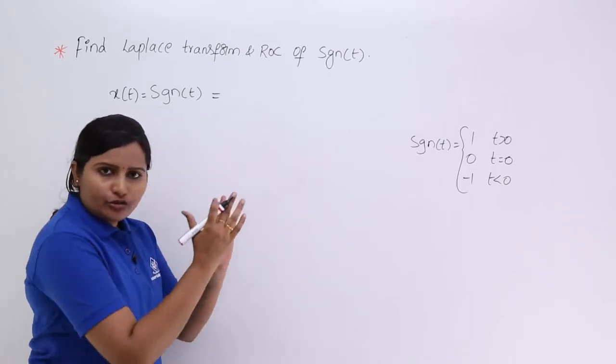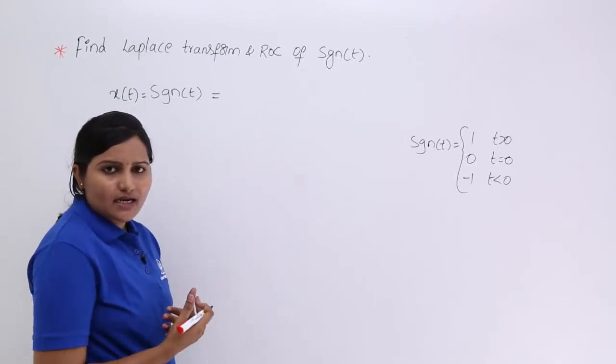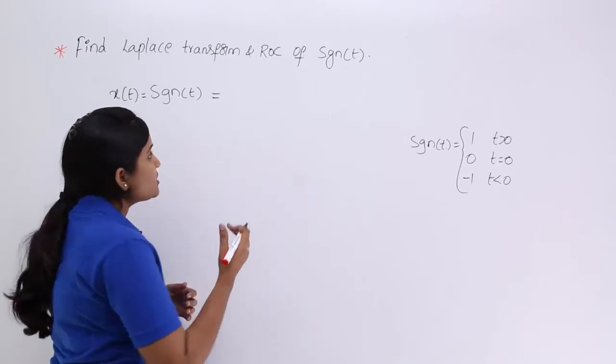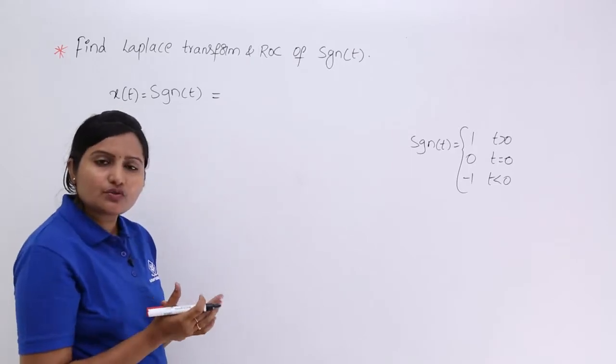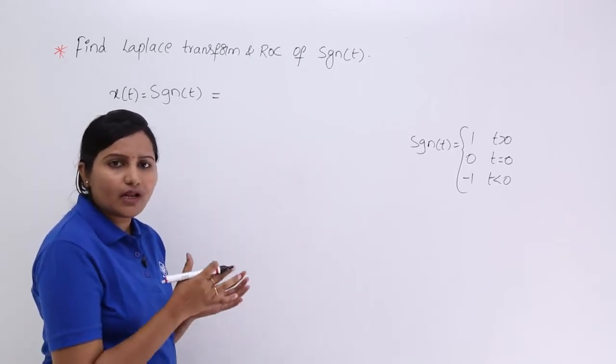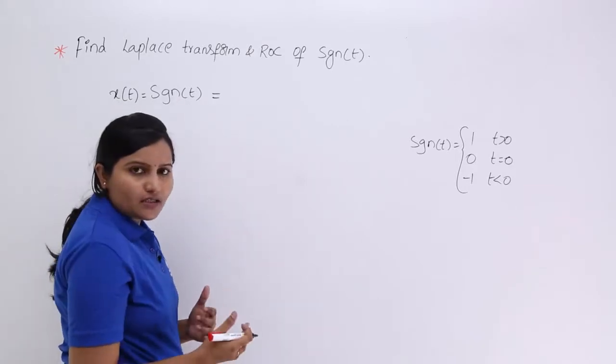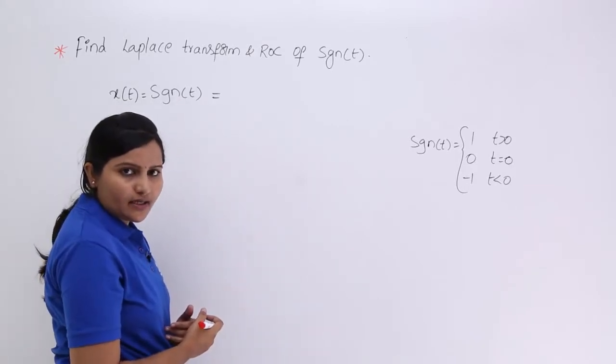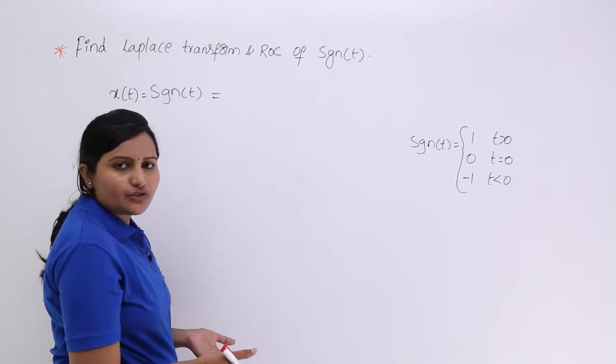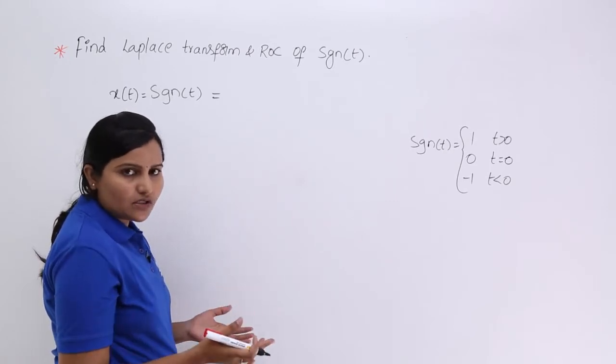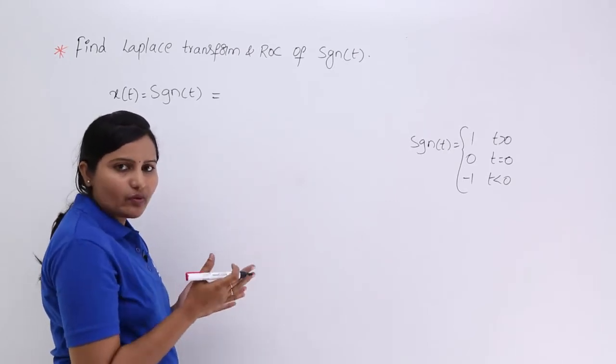I do not want to do all that procedure to get the Laplace transform of signum function. I am just using unit step functions, which we already have knowledge of Laplace transform of unit step. If I can define my signum function in terms of unit step, then that is very easy to get the Laplace transform also, because we know Laplace transform of unit step.